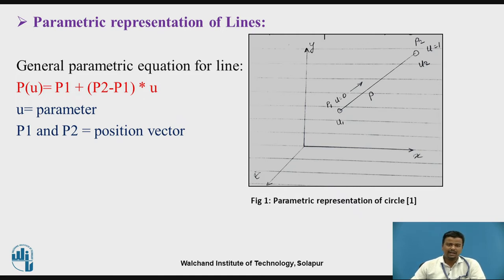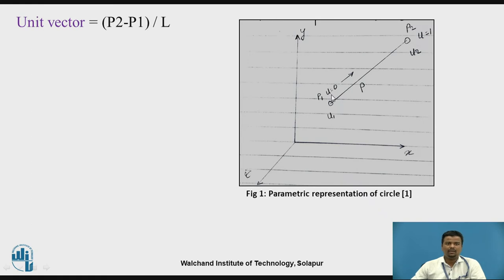Whenever we create a line, there is an equation behind it. u is equal to 0 at the starting point and u is equal to 1 at the end point. U is the parameter, and p1 and p2 are the position vectors, where p1 is at the initial point and p2 is at the end point. The unit vector is (p2 minus p1) divided by L, where L is the length of the line.